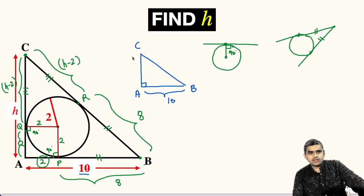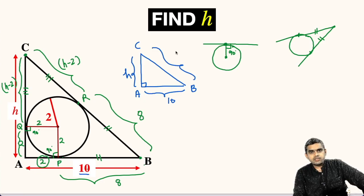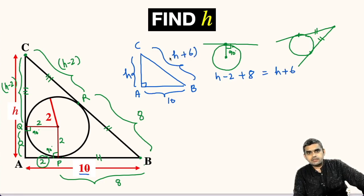AC length is given to us as h units, and CB will be equal to h minus 2 plus 8 units. So this will be equal to h plus 6 units.